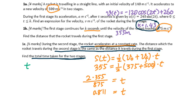So the total time for the two stages is t total equals 1.43 plus 0.811, which equals 2.24 seconds.